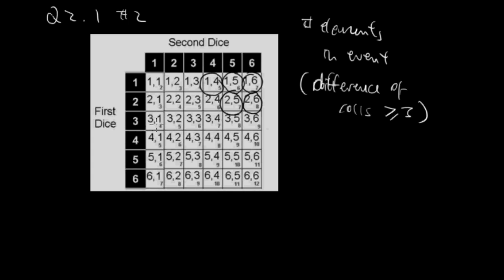And then 3 and 6, the difference is 3. 4 and 1, the difference is 3. And then 5 and 1, the difference is 4, 5 and 2 the difference is 3, and then we have 6,1, 6,2, and 6,3 also works.